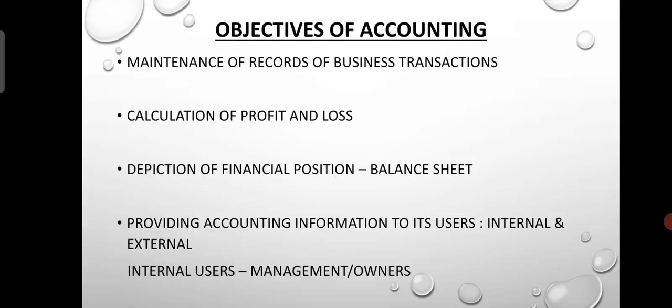The first objective is the Maintenance of Records of Business Transactions. If you are running a supermarket or a business firm, you will have many transactions. If you want to record expenses, income, or transactions for the current month, they must be properly recorded. That means the maintenance of records is one objective of accounting.